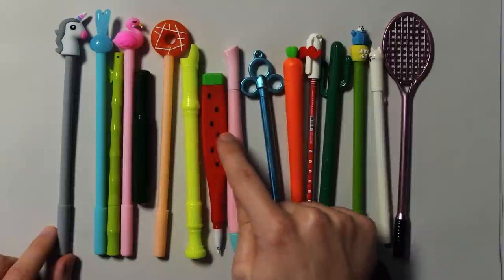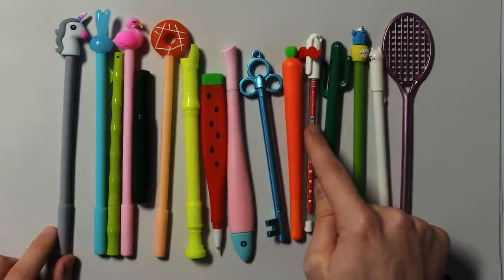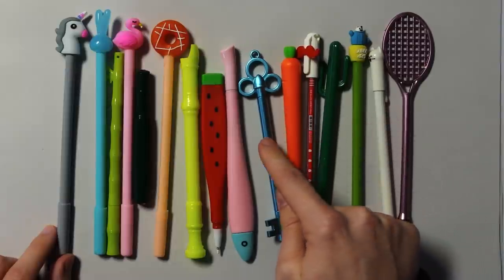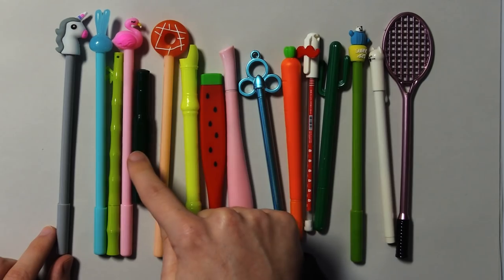Catch a tiger by his toe. If he hollers, let him go. Eeny, meeny, miny, moe. My mother says I should use this pen to draw with.